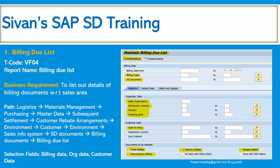Here we need to be careful to choose the options like whether you want to see the order-related billing, delivery-related billing, or rebate-related billing type, intercompany billing — whatever the documents, appropriate documents which are due for billing. If you select the order-related, then the sales orders will be displayed on the output screen because they are third-party scenarios or individual purchase orders. Especially the third-party scenarios will be displayed, specifically for the billing due list.